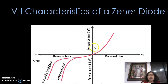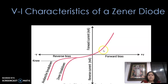Let us see the V-I characteristics of a zener diode. On the x-axis, voltage is taken for both forward and reverse bias conditions. On the y-axis, current is plotted in milliamperes. For forward bias, the graph is plotted in the first quadrant and is similar to a normal P-N junction diode. For reverse bias, very little current flows due to minority carriers until the reverse breakdown voltage is reached, at which point the current increases very sharply.